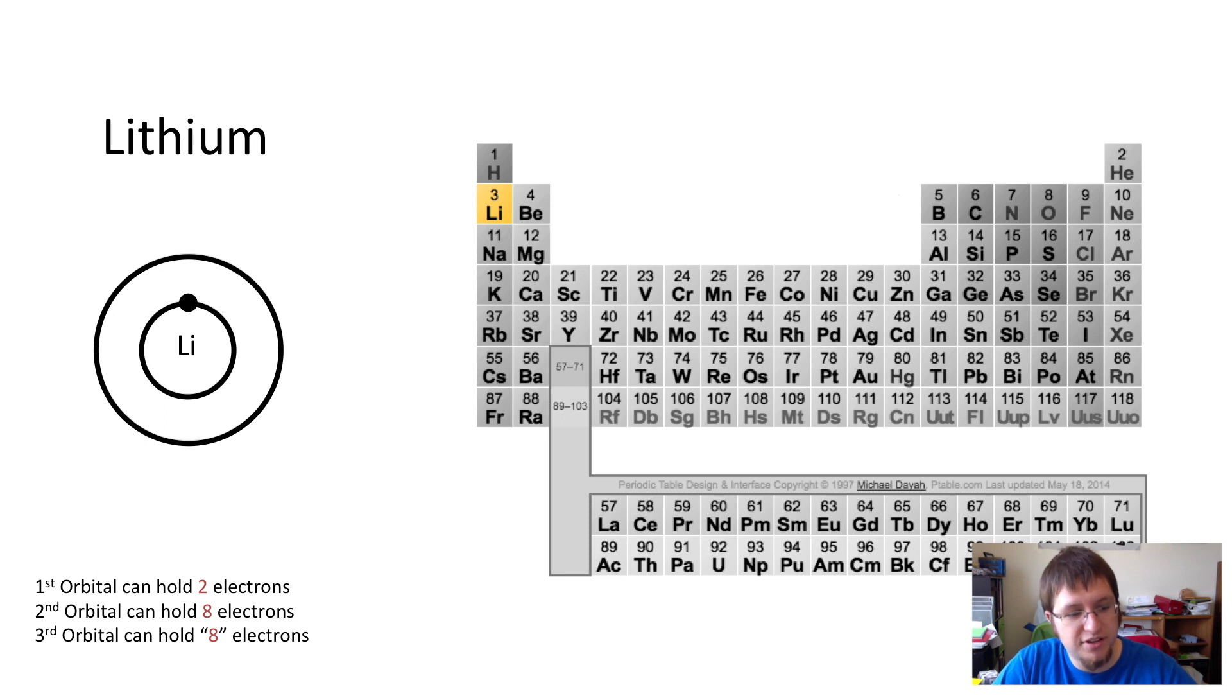What we're going to do next is we're going to start filling in the electrons. We always start with the first shell first. We need to fill up the first shell before we can move on to the second. So we put in that first electron on the top, and then we're going to put in the second electron on the bottom. That's two electrons. That's all that first shell can hold.